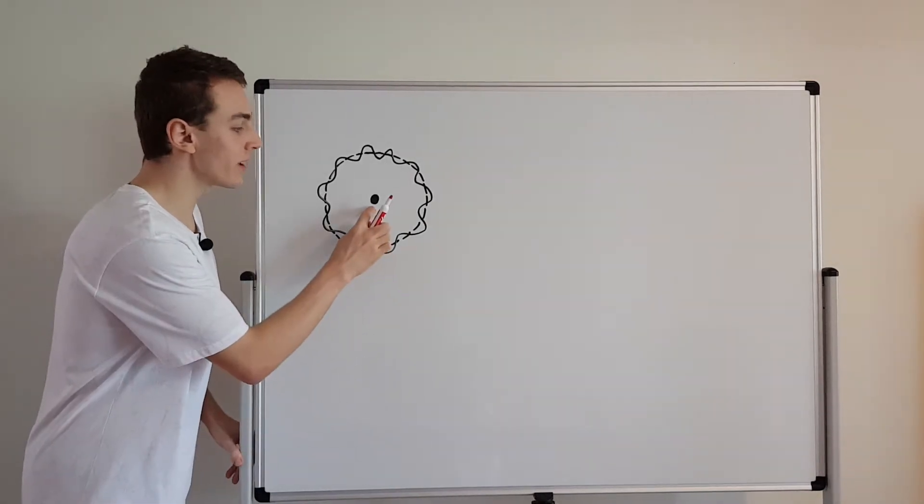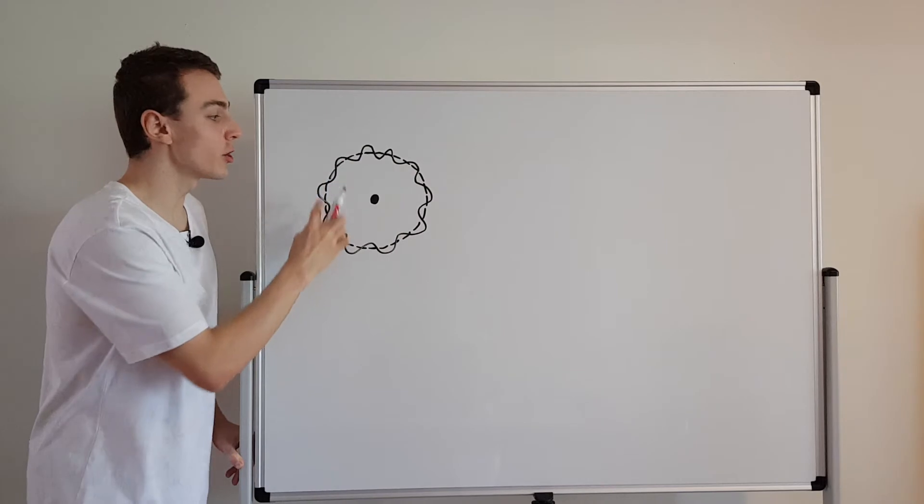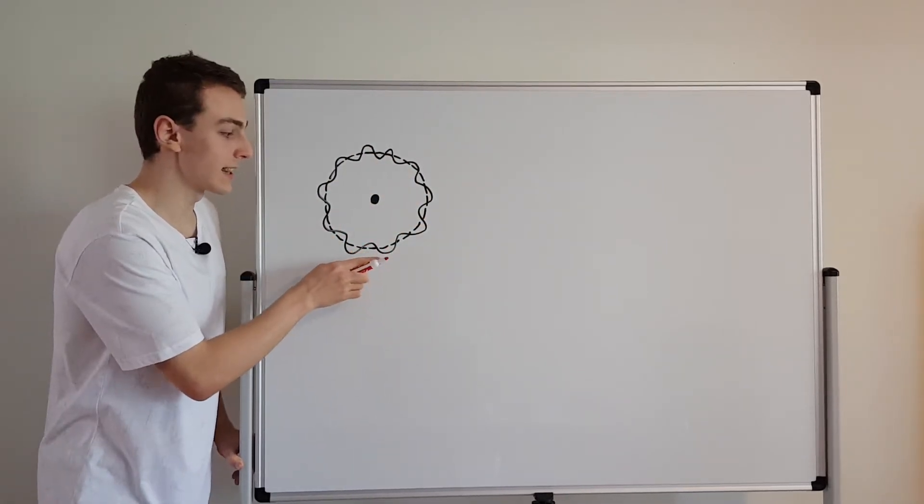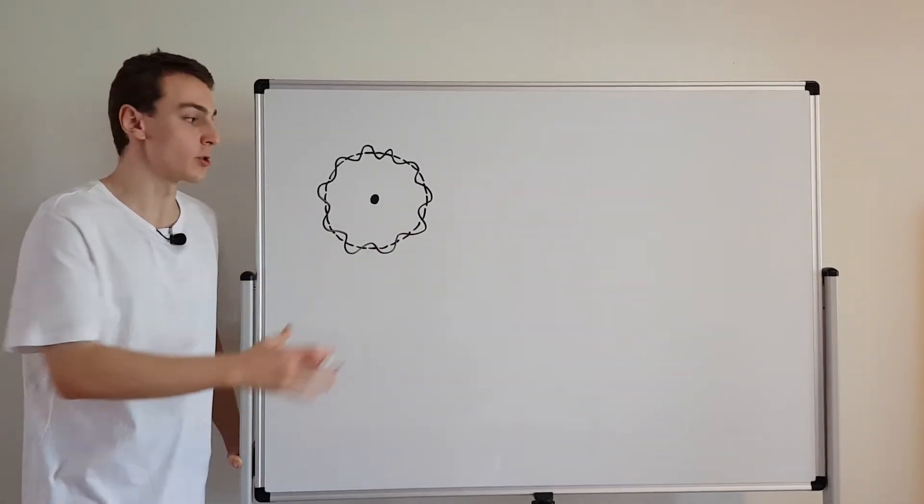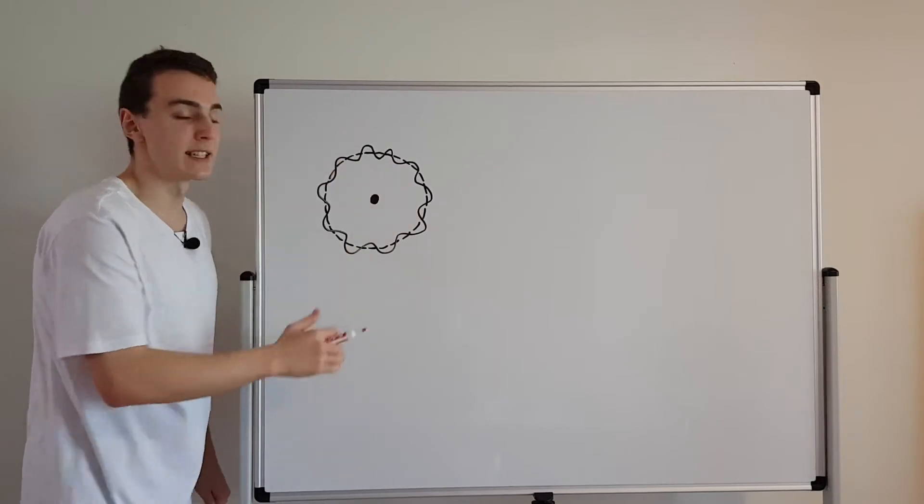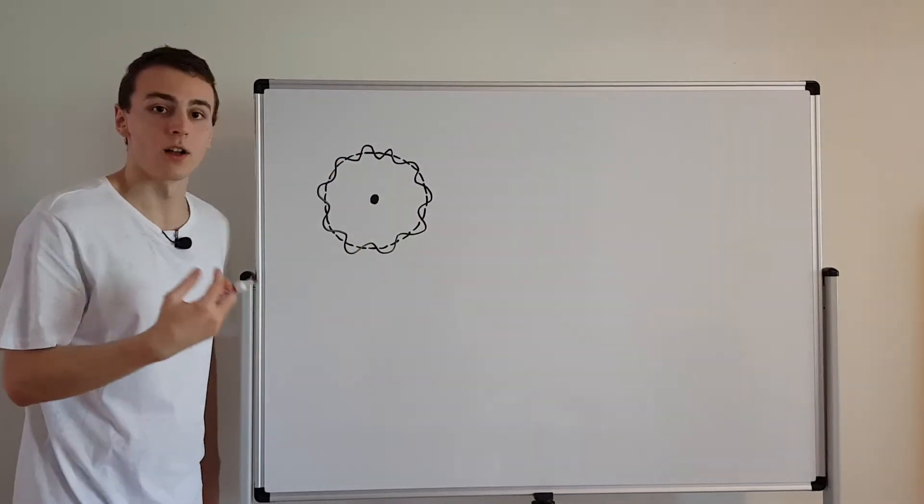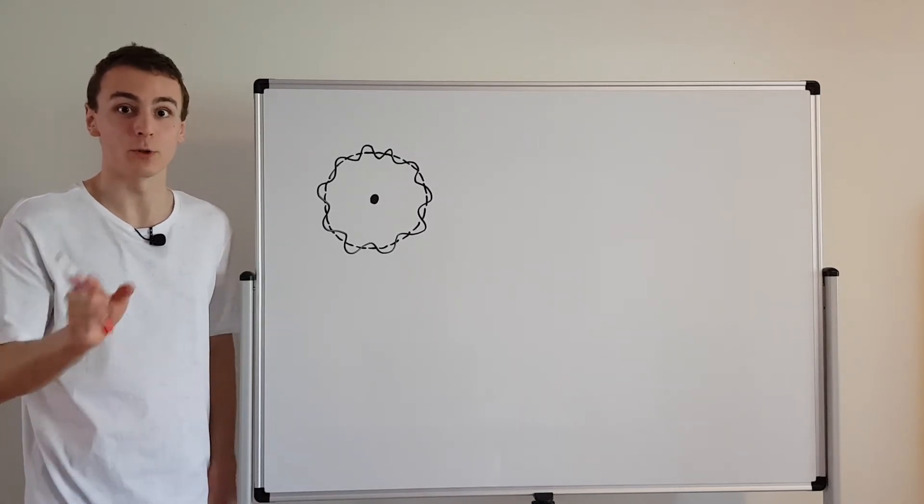So imagine the nucleus is over here and the electron is orbiting in a circular orbit around over here. It has a fixed velocity, a tangential velocity, and it has a fixed radius and it also has a fixed energy. So each of these orbits has fixed values for all of those quantities for radius or energy and also for angular momentum which we'll see in a moment.